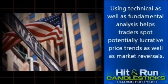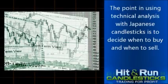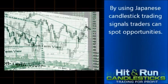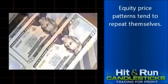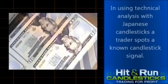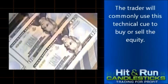Using Technical as well as Fundamental Analysis helps traders spot potentially lucrative price trends as well as market reversals. The point in using Technical Analysis with Japanese Candlesticks is to decide when to buy and when to sell. By using Japanese Candlestick Trading Signals, traders can spot opportunities. These signals help predict future equity prices based on two things: current market performance and historic market performance. Equity price patterns tend to repeat themselves. A trader spots a known candlestick signal, which indicates that the equity price will likely rise or fall.